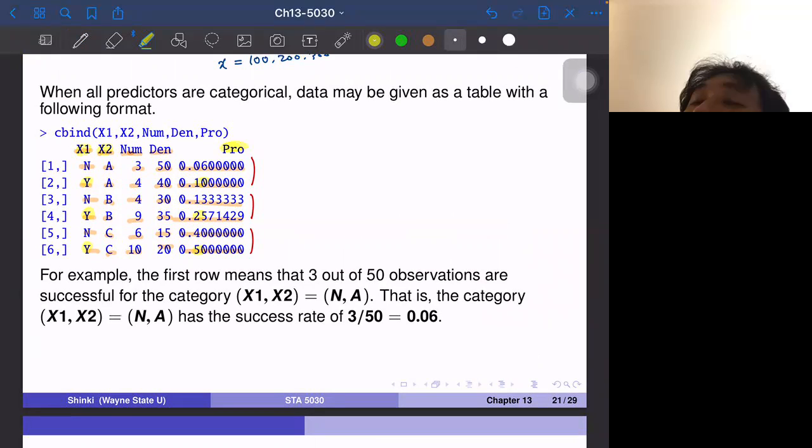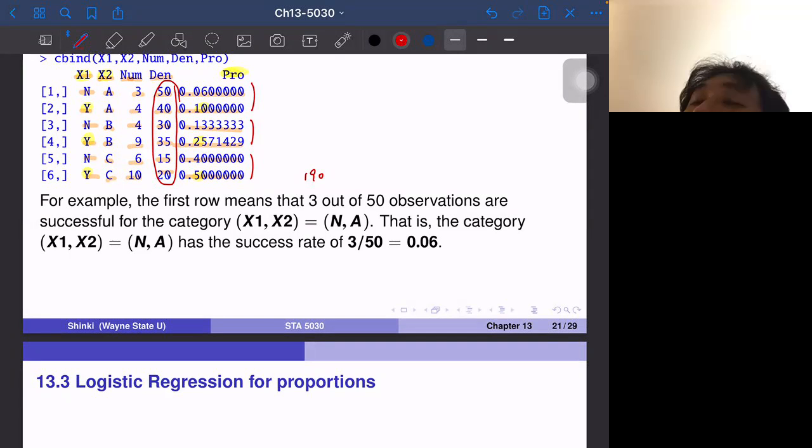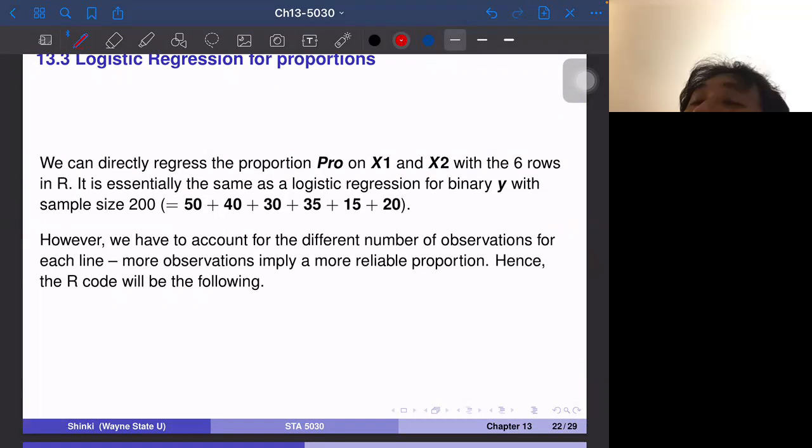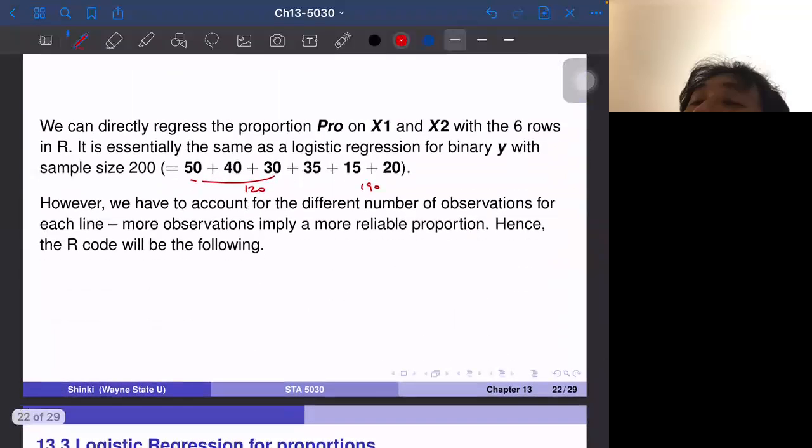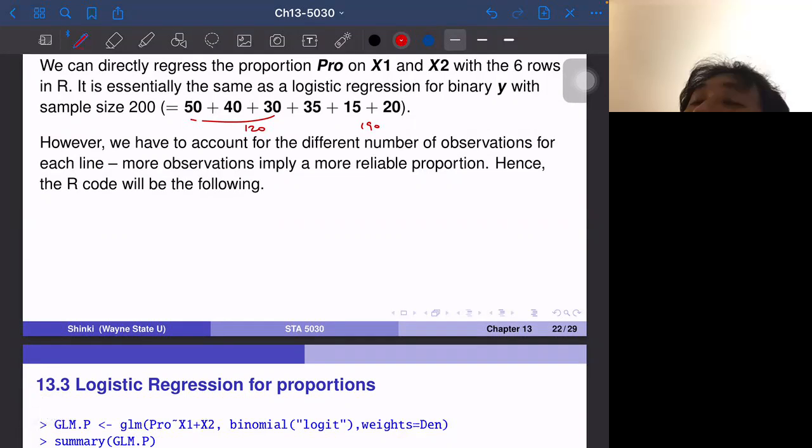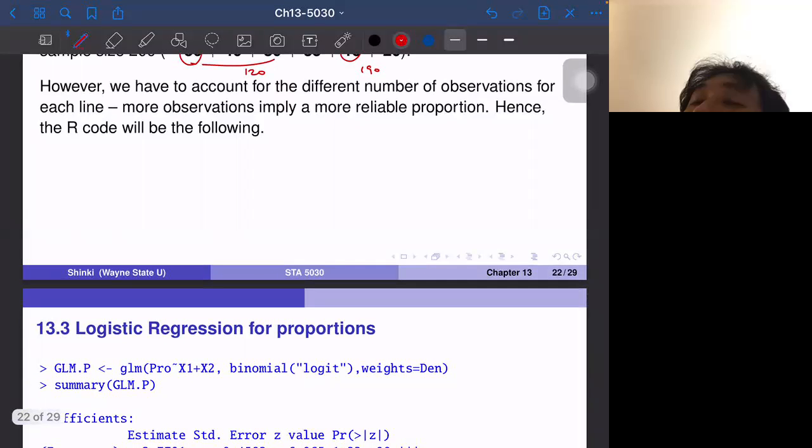So the sample size of this data set was originally 50 plus 40 plus 30 plus 35 plus 15 plus 20, so 190 observations, but it's summarized in this table. And actually we don't really have to have 190 observations because this table includes all necessary information. So basically we only have six lines. We don't really have to generate the data set for 190 observations, but still we want to account for the fact that the first line consists of 50 observations and fifth observation only consists of 15 observations. So the first line has more information than fifth line.